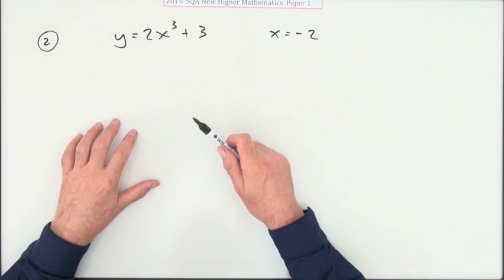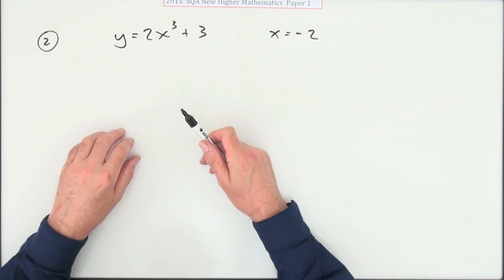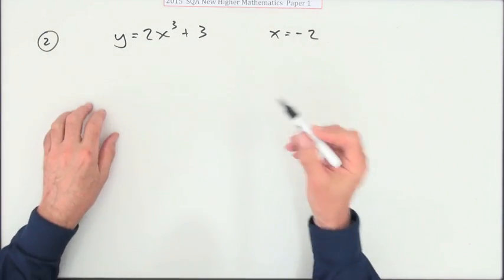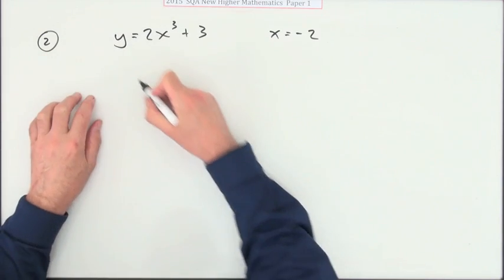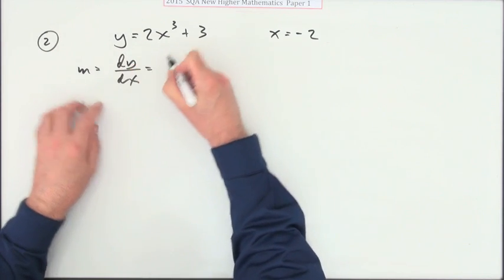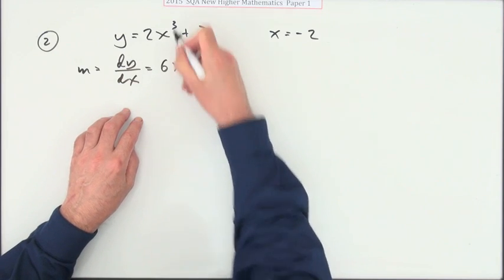Number two then from Paper 1 of this New Higher 2015. Here's the equation of a curve, you define the tangent at the point where x is negative 2. Well there's the coordinate equation that gives you the y coordinates. If you want the gradient you'll need the derivative, so multiply by the power, take one off the power, and that disappears. That's all there is to it.